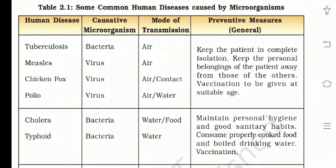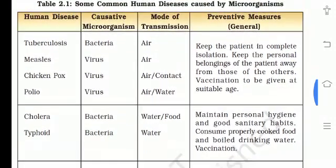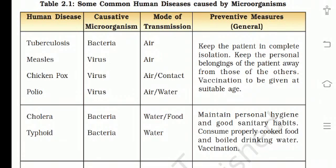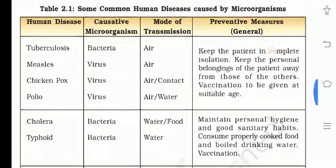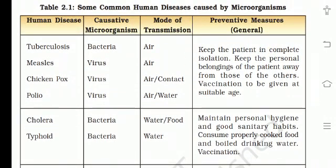Iska transmission sirf air ki wajah se hota hai — lekin chickenpox ka transmission air ki wajah se bhi hota hai aur kisi infected person ke contact mein aane se bhi. Polio ka infection air ke through toh hota hi hai, uske saath saath paani mein bhi bacteria present rehte hain. Preventive measures: keep the patient in complete isolation and keep the personal belongings of the patient away from others. Jo bhi person ko ye diseases hongi, usko complete isolation mein rakhna chahiye. And vaccination should be given at suitable age — in saari diseases ke liye vaccinations bhi di jaati hain.